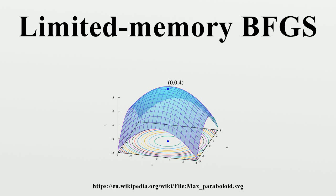We also assume that we have stored the last M updates of the form s and y, and H_0 will be the initial approximate of the inverse Hessian that our estimated iteration begins with. Then we can compute the direction as follows.